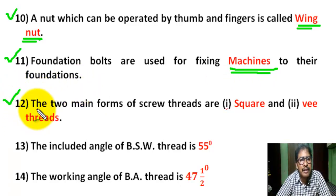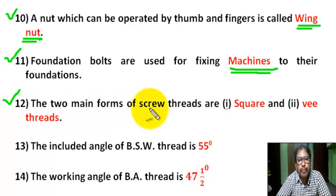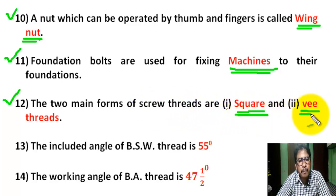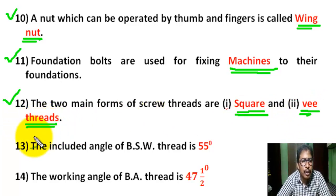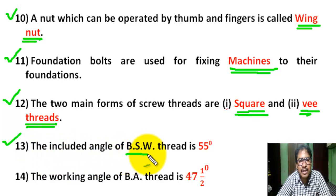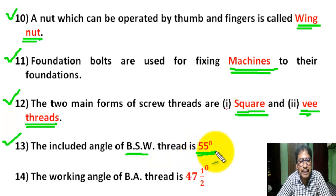Question 12: The two main forms of screw thread are square thread and V-thread. Question 13: The included angle of BSW (British Standard Whitworth) thread is 55 degrees.